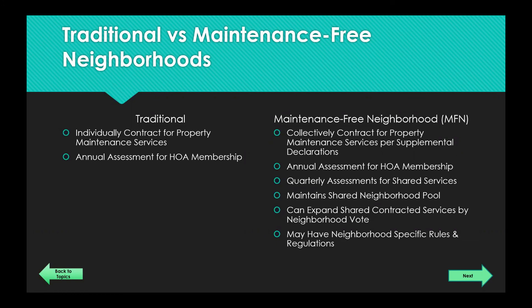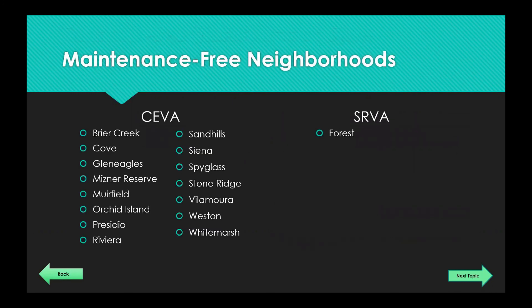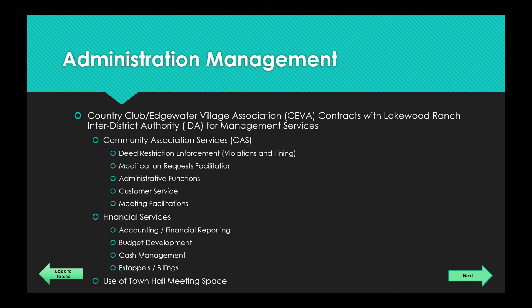In an MFN neighborhood, the neighborhood committee guides and takes care of the contracts for those shared services. In a traditional neighborhood, you as an individual take care of your own lawn, landscape, and light out front. We just wanted to point out what the differences were. The SEVA maintenance-free neighborhoods are shown on the slide. We also have one MFN in Summerfield Riverwalk Village Association in the Forest, just giving you an idea of where those MFN neighborhoods are.